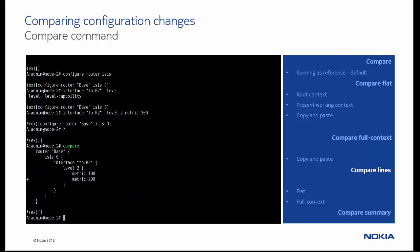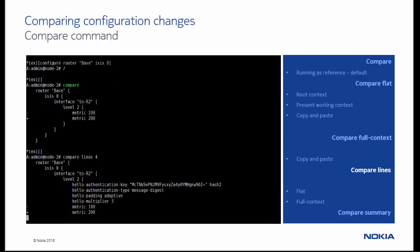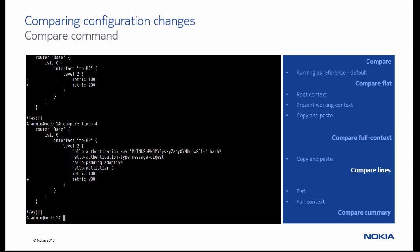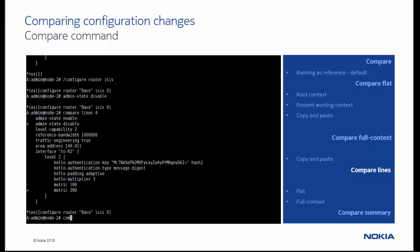We can also use the lines option with a number, to show the lines of configuration before and after the changed element. This is useful to display extra configuration of a container. Let's change the admin state to disable, and see the extra lines after the change.